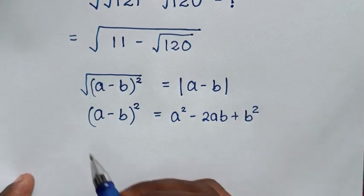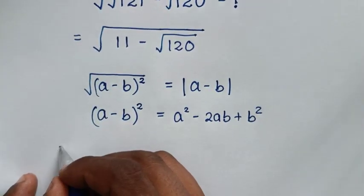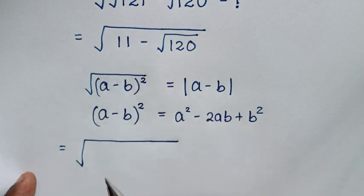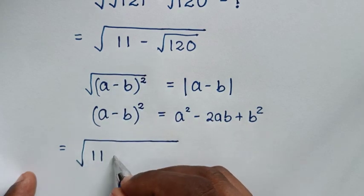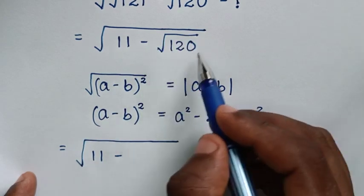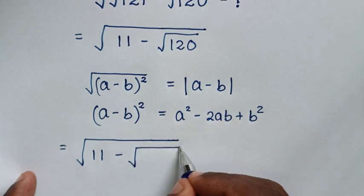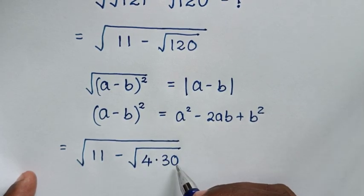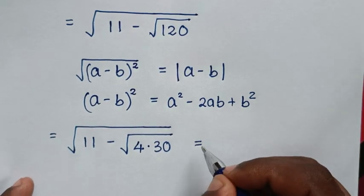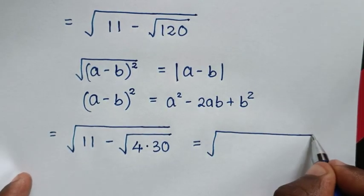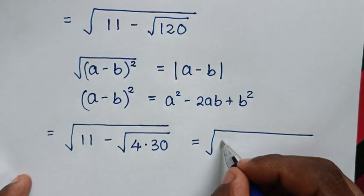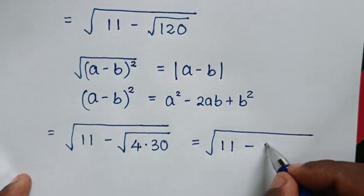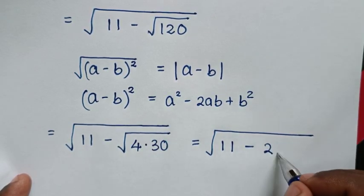So we have the square root of 11 minus √120. Now √120 is the same as √(4 × 30), and since 4 × 30 = 120, this becomes √11 minus √4·√30, which simplifies to √11 minus 2√30.